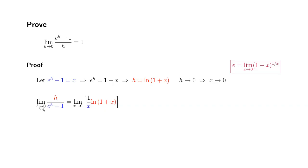So h approaches 0 becomes x approaches 0. And h is replaced by natural log of 1 plus x. And then e to the h minus 1 is replaced by x.